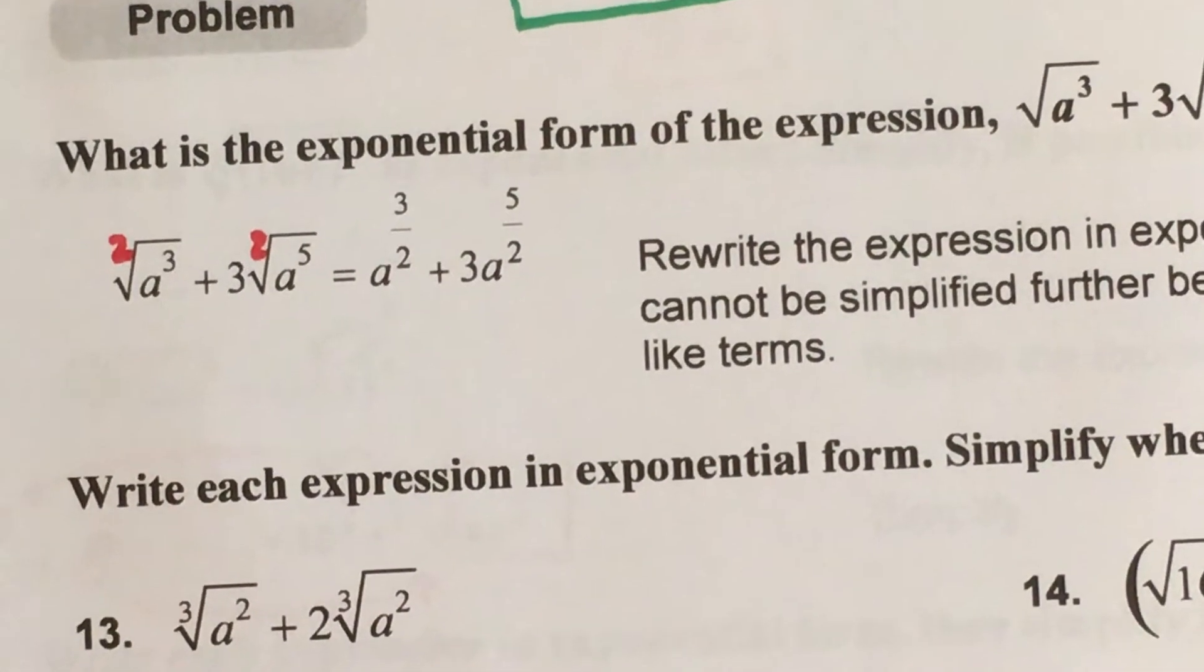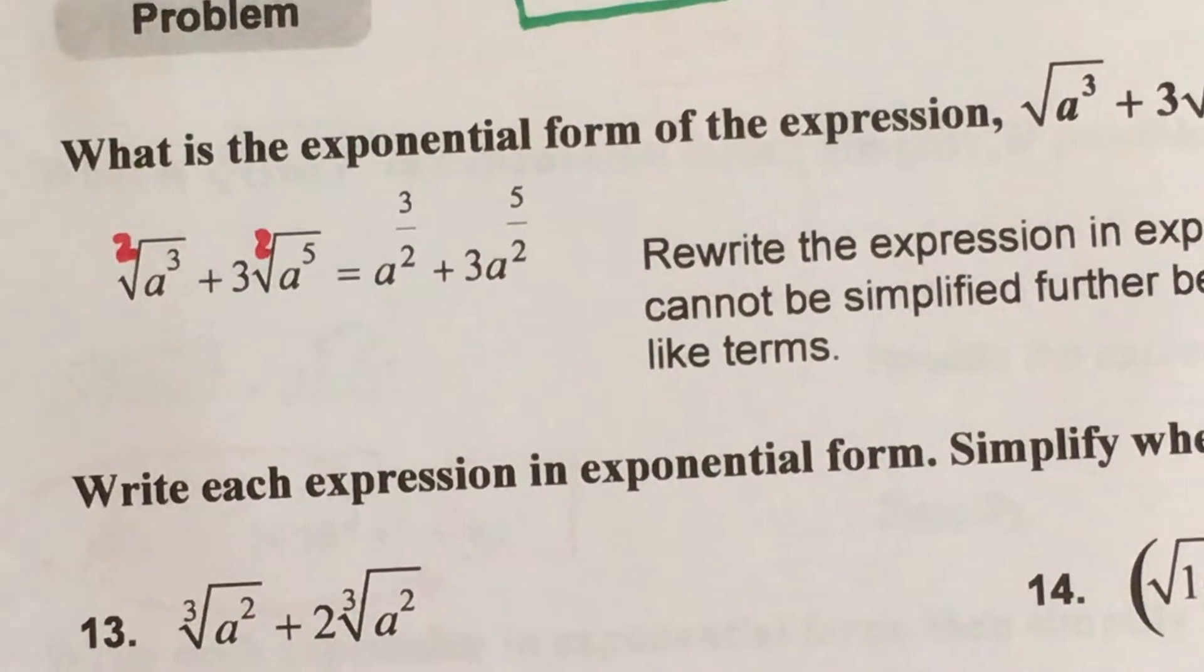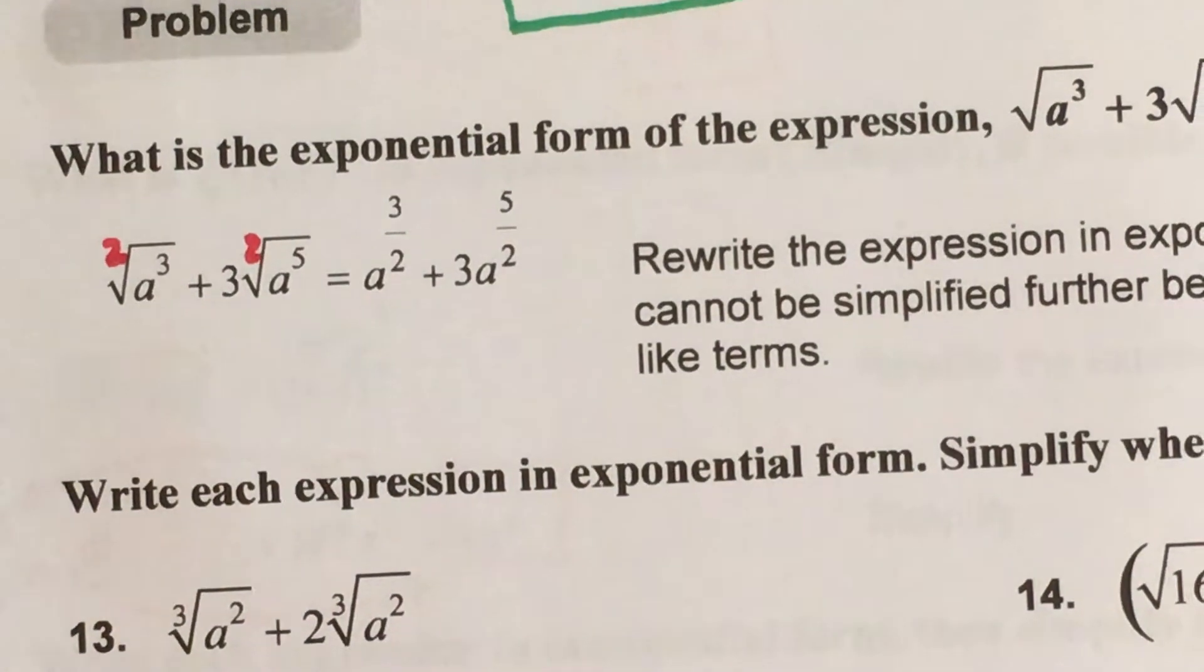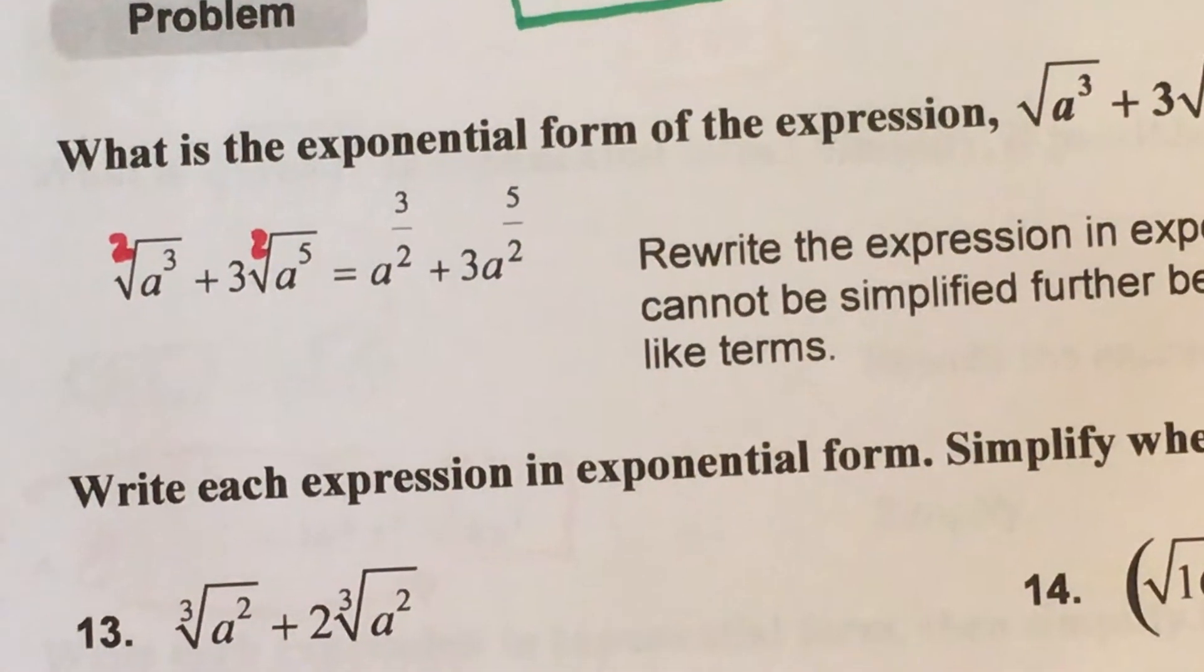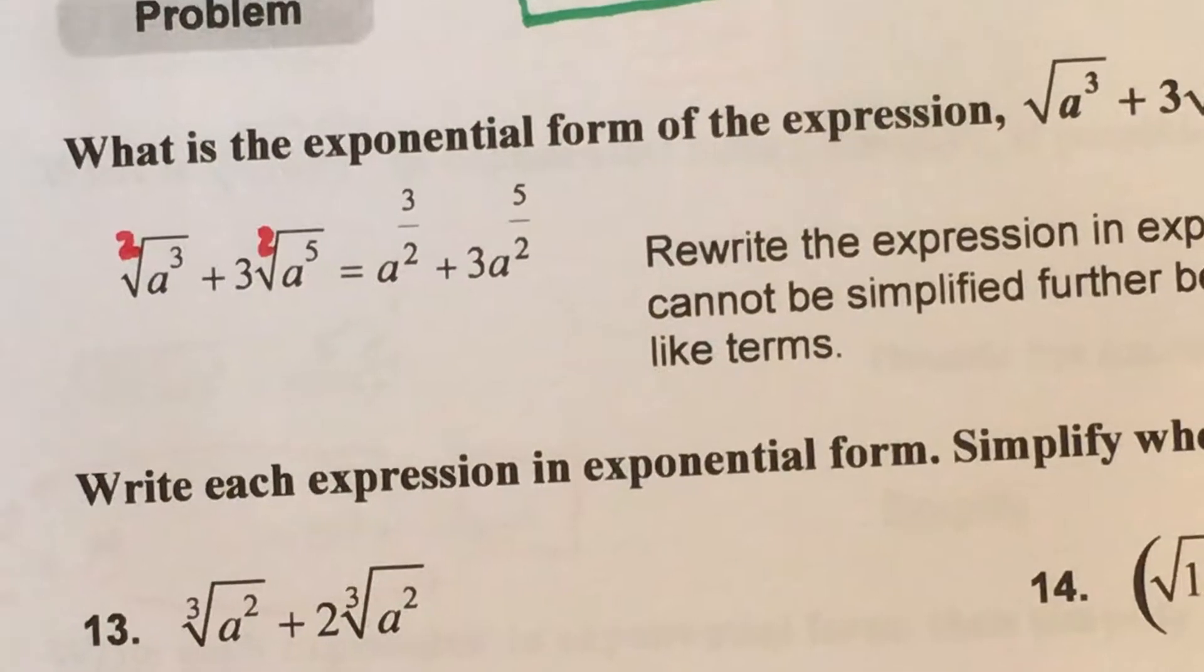This second term is 3 with a to the 5 halves. So the question is can we merge these two a's together to make more of something and in this problem the answer is no.